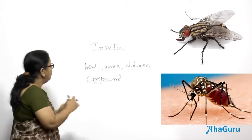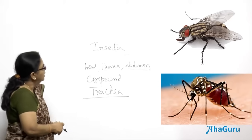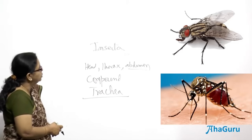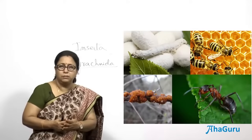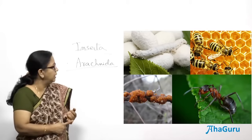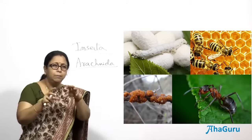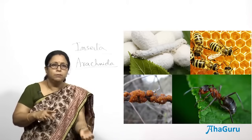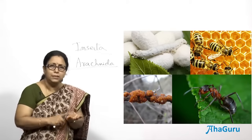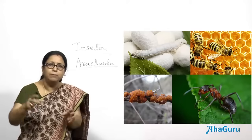Insects respire with the help of a tracheal system, and they are also dioecious. Some insects are economically important, especially social insects that form colonies. Termites, for example, eat wood and form colonies with specialized individuals — soldiers, kings, and queens. Ants are also social insects that form colonies, and bees are social insects with specialized division of labor that also form colonies.